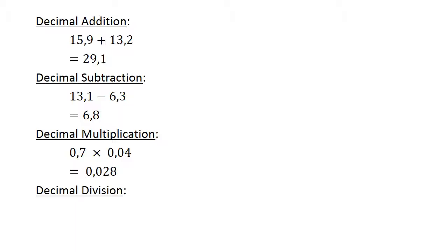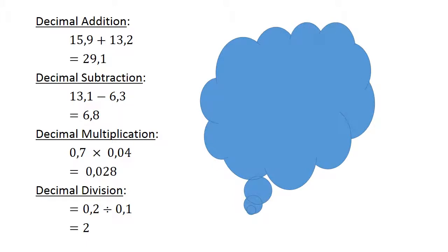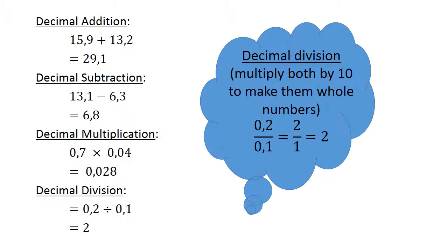Decimal division: 0,2 divided by 0,1 equals 2. You multiply both by 10 when you do decimal division. Then you get 0,2 divided by 0,1 is equal to 2 over 1, which is equal to 2.